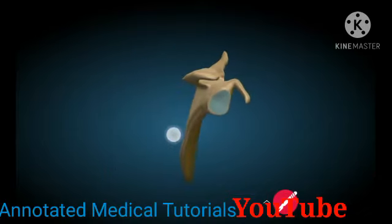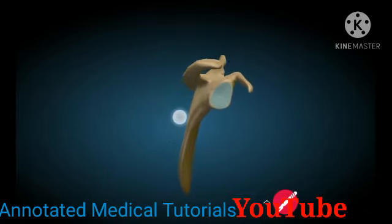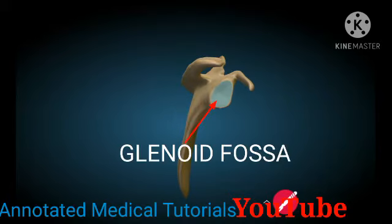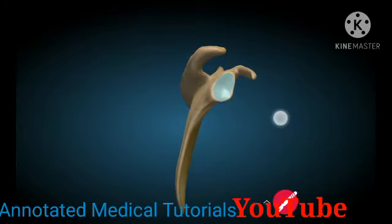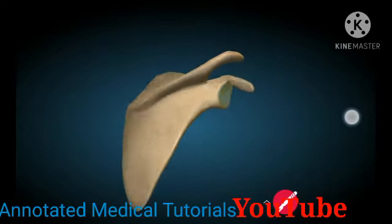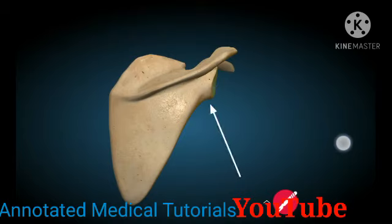On the lateral angle we have got a fossa called the glenoid fossa, and it articulates with the humerus to form the shoulder joint. There is a tubercle here, and simply because it is above the glenoid fossa it is called the supraglenoid tubercle. And that below is called the infraglenoid tubercle. These are also for the attachment of muscles.